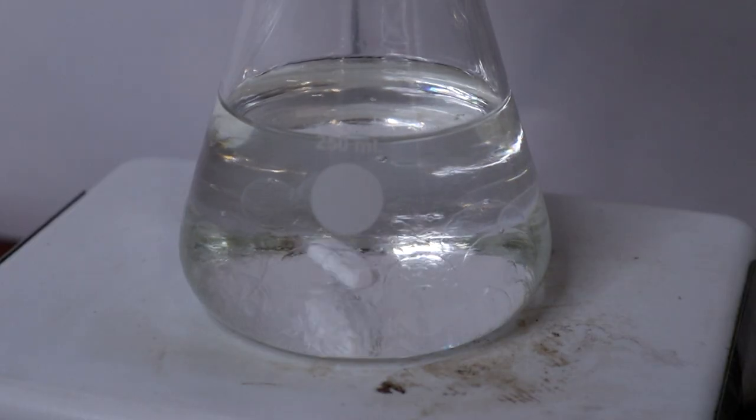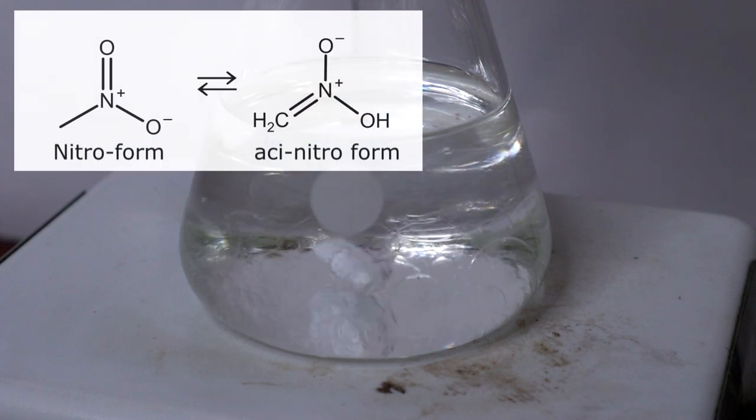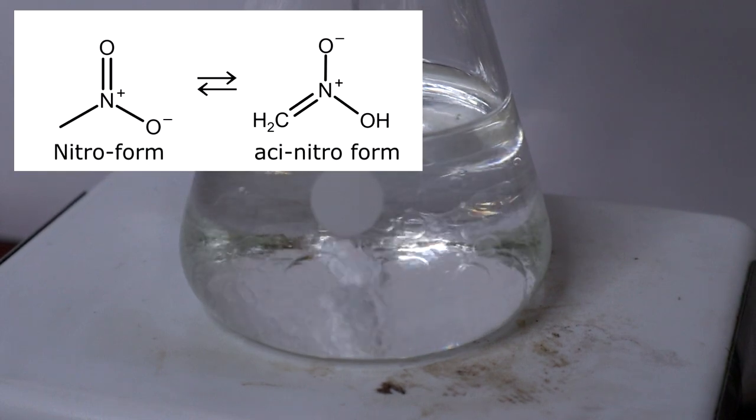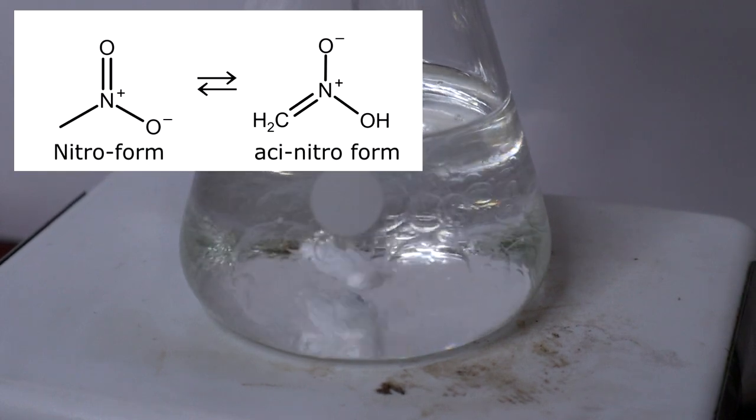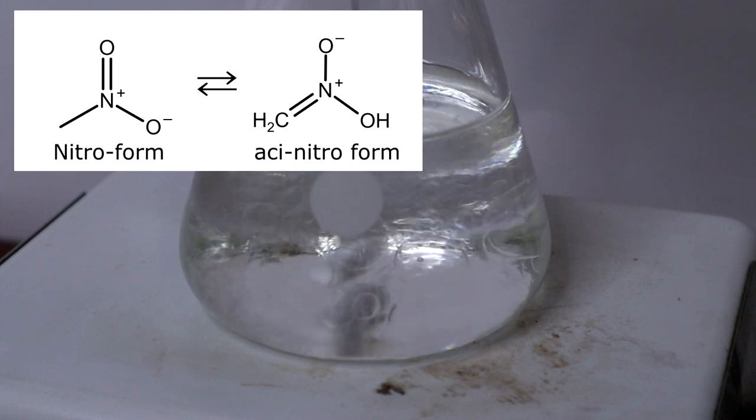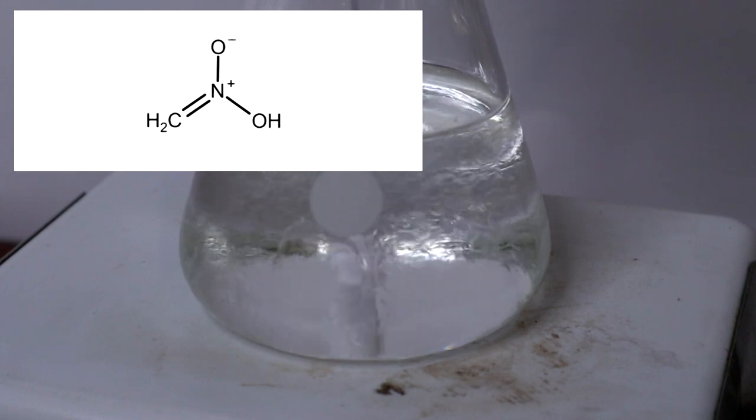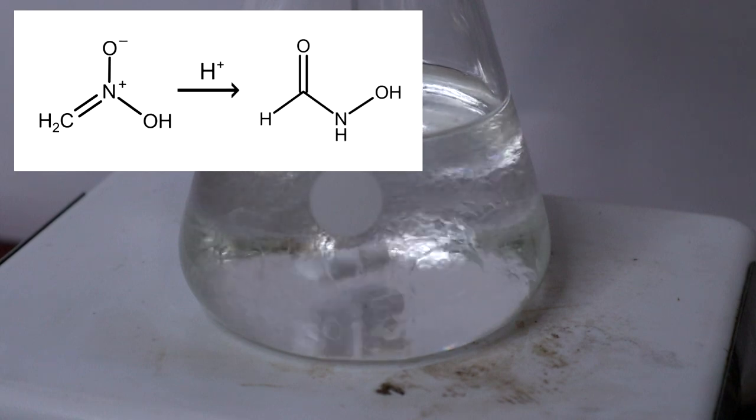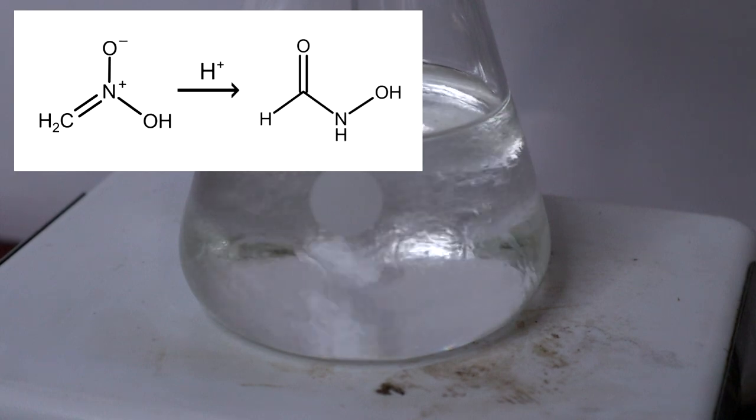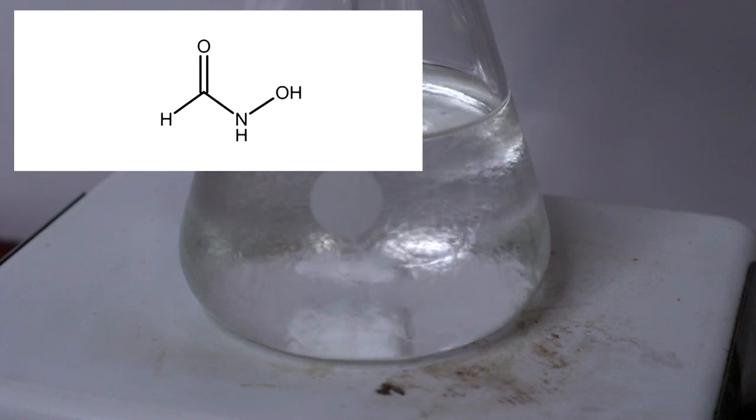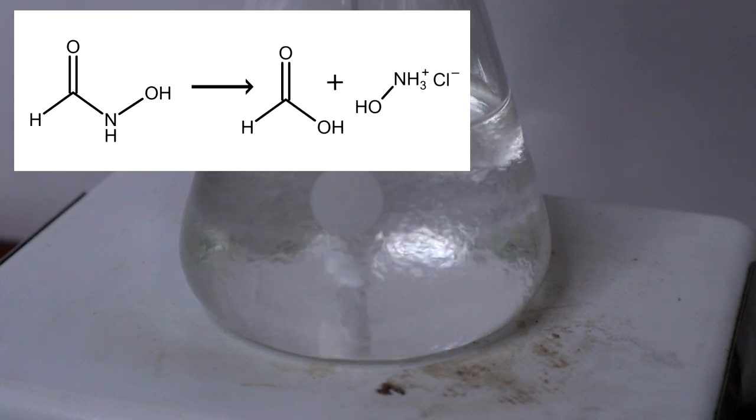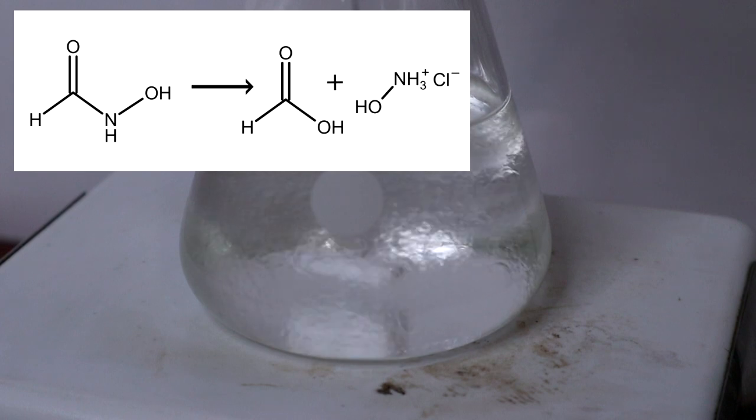So what's going on inside the reaction vessel? To begin, nitromethane is in equilibrium between two tautomers, the nitro-form and the aci-nitro form. In the first step, the aci form reacts under acidic conditions to form a hydroxamic acid. The hydroxamic acid is then hydrolyzed into a carboxylic acid, formic acid in this case, and hydroxylamine.